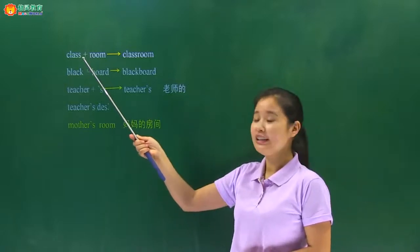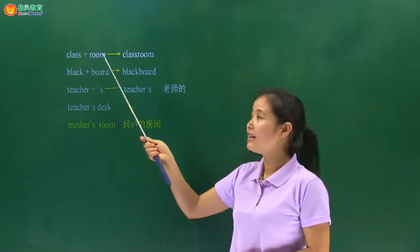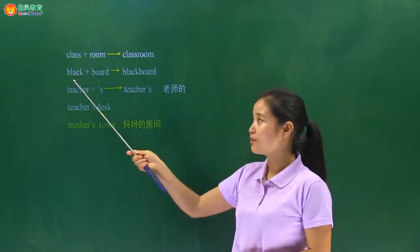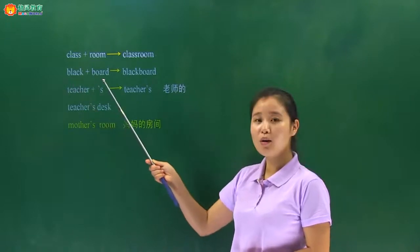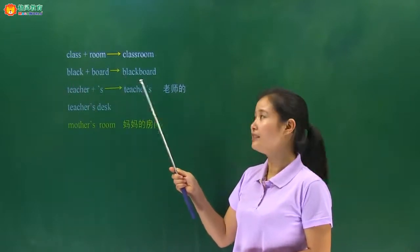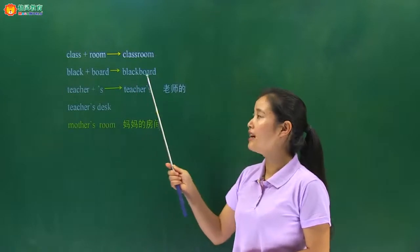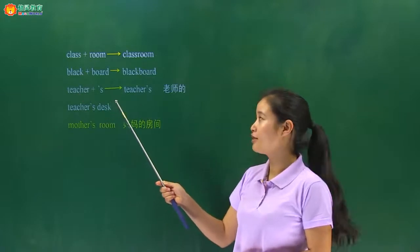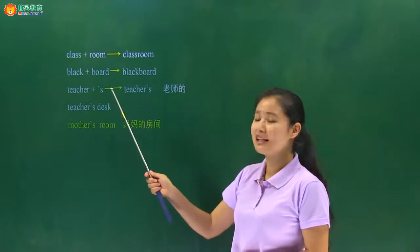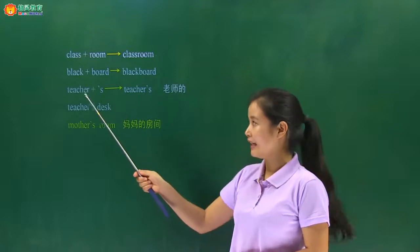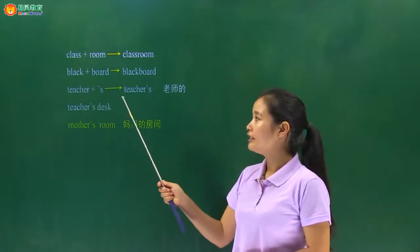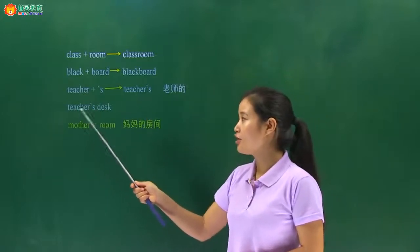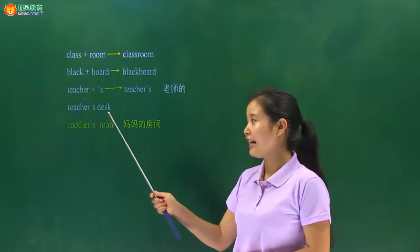好，刚才我们说的有几个比较难的单词，我们再一起回顾一下。第一个，教室，它的构成方法：class 加 room，classroom，教室。Next one：black 加 board，blackboard，黑色的板子，黑板。Teacher 加 's，它表示老师的，teacher's desk，讲台。